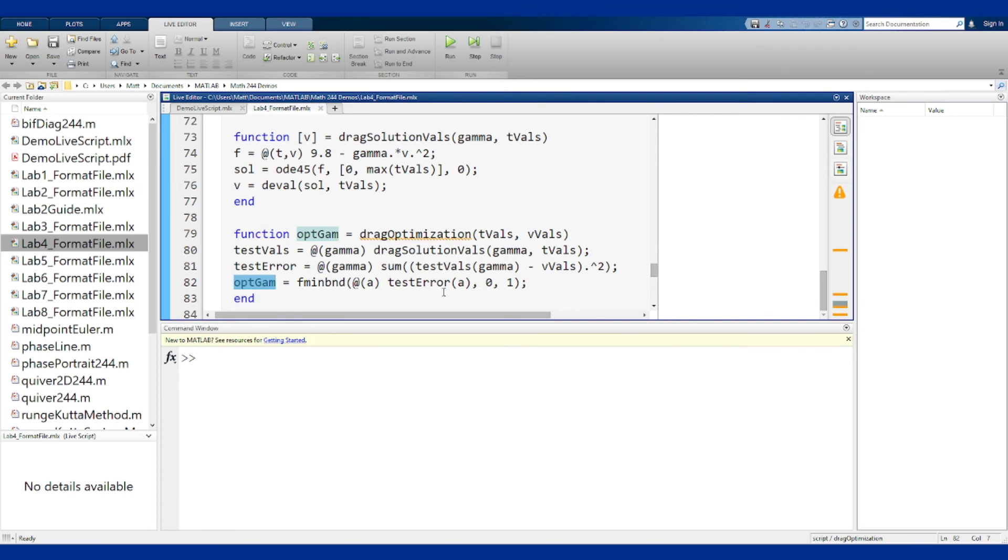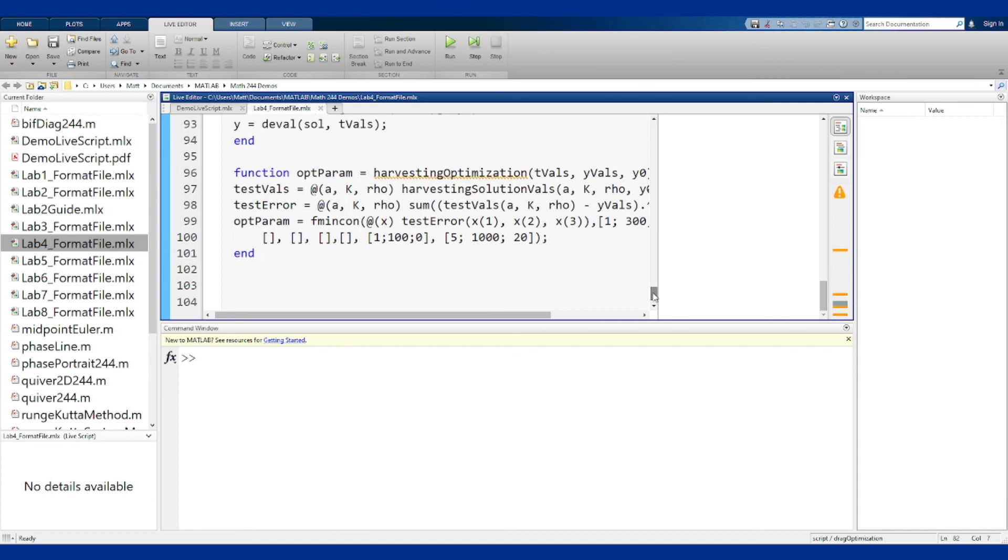As you work through the lab, you also see the second part that talks about doing this for a more complicated problem, the harvesting problem. That code is also here. It's the same idea, it's just now more involved because there are now three parameters instead of just one, so it's fmincon, different functions called, and all this stuff is a little bit different, but the ideas are the same.